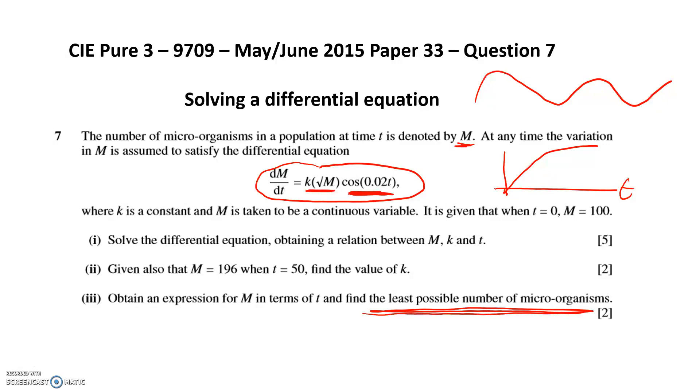The first thing we've got to do is to solve the differential equation and get a relationship between M, k, and t. In other words, find a general solution, and then we're going to get a particular solution. We're going to use two bits of information, this one and this one, and that's going to give us k. The last thing we have to do is figure out the least possible number of microorganisms.